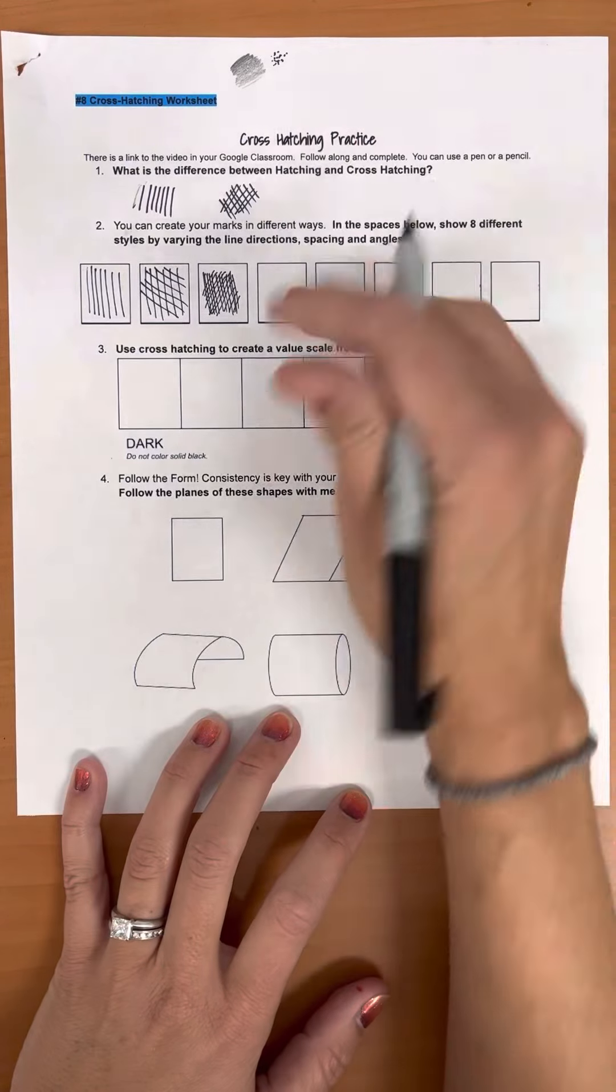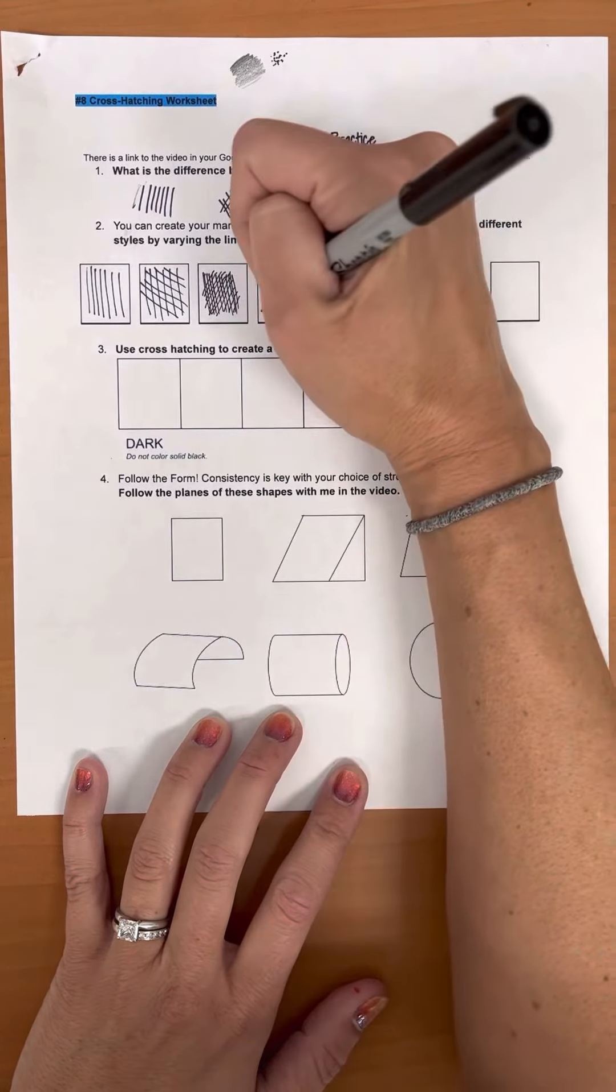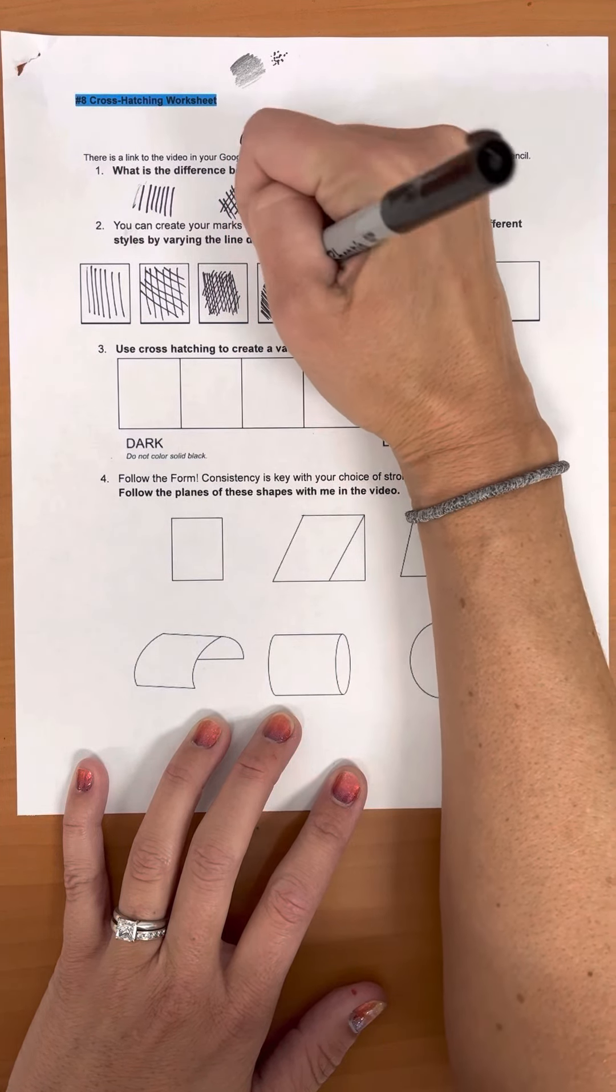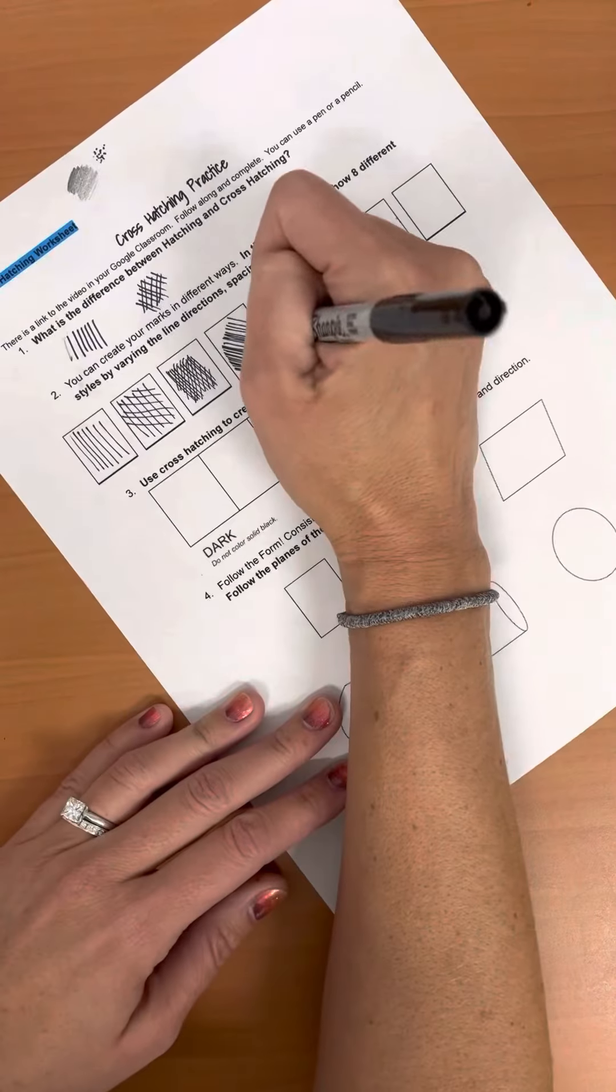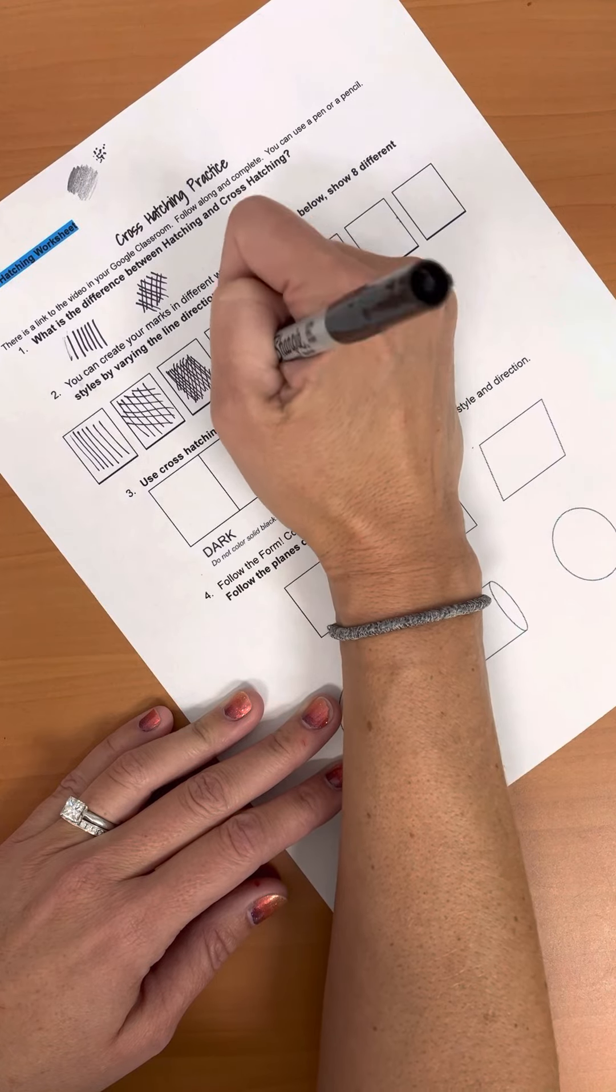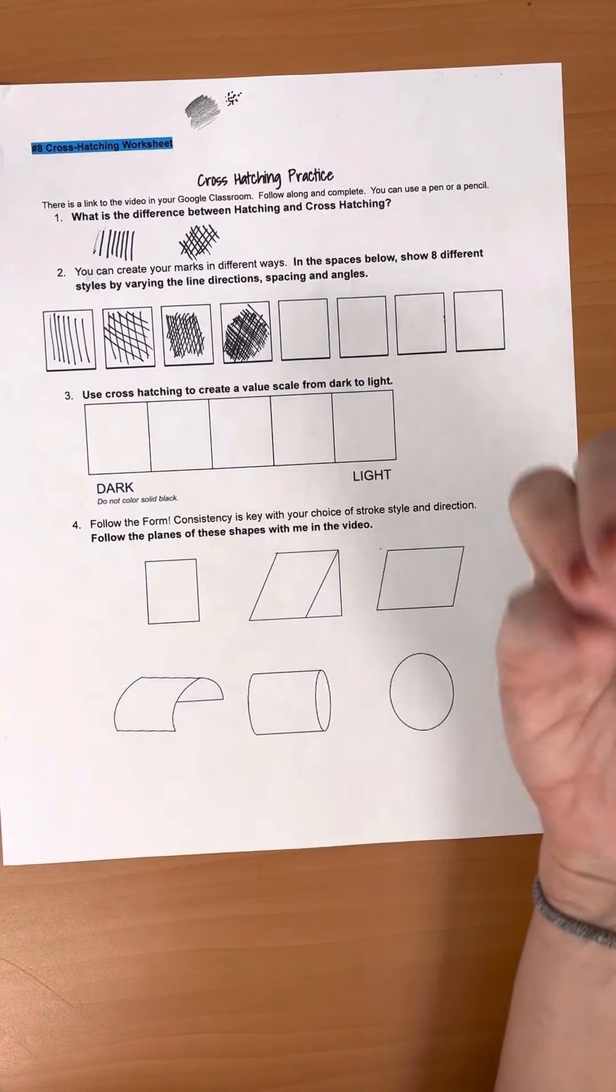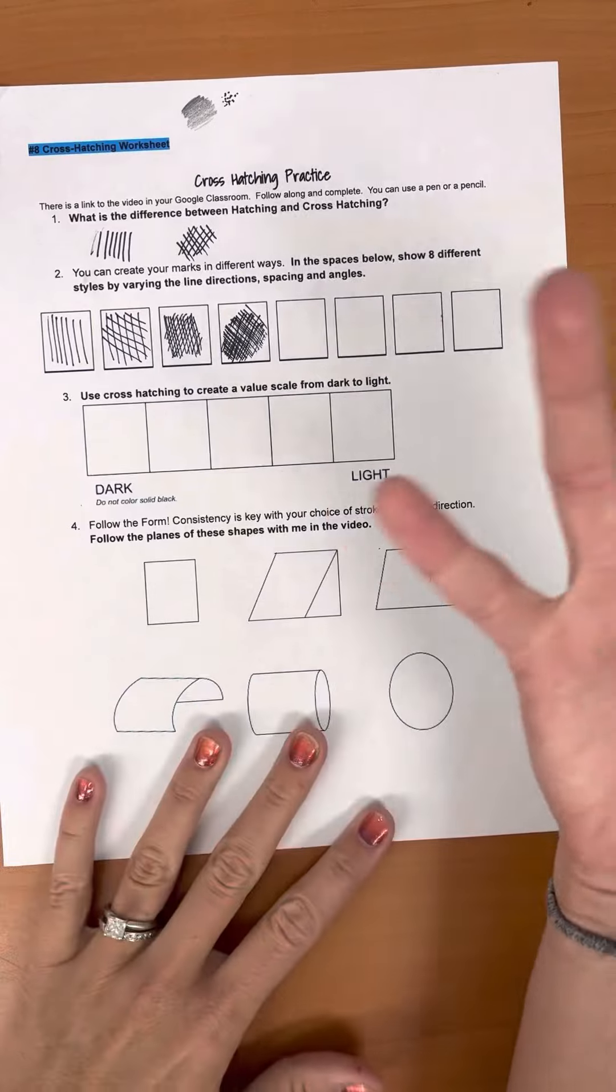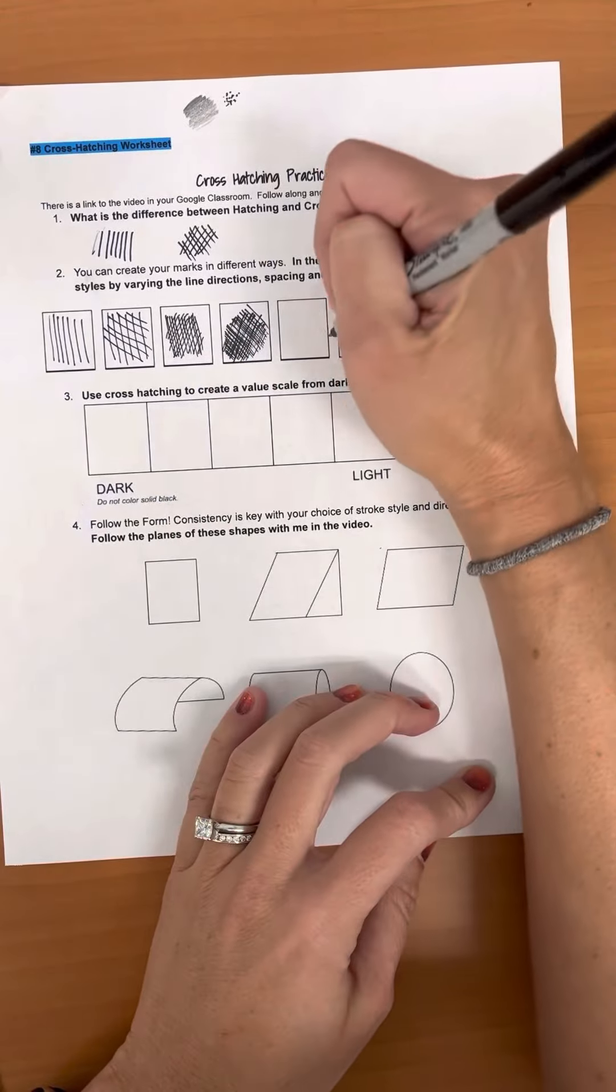So just take a couple of minutes and fill these boxes with different ways of making marks. They could be really tight diagonals, and then I'm going to cross it with diagonals. I'll leave the verticals out of that one. Now this technique is much better done with a pen or I'm using a thin sharpie, some sort of inking device. You don't want to do a pencil because then it's going to smudge and you lose your effect.